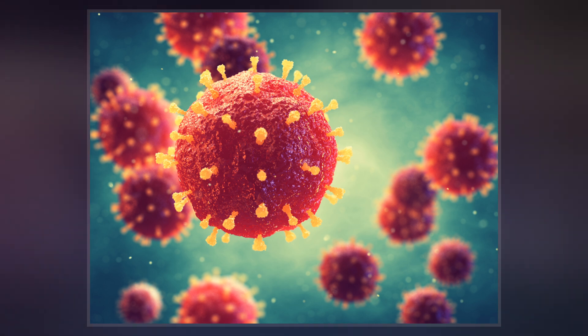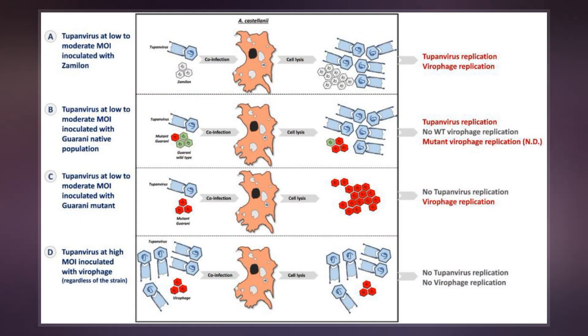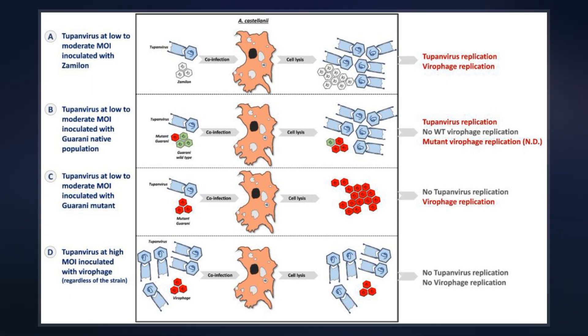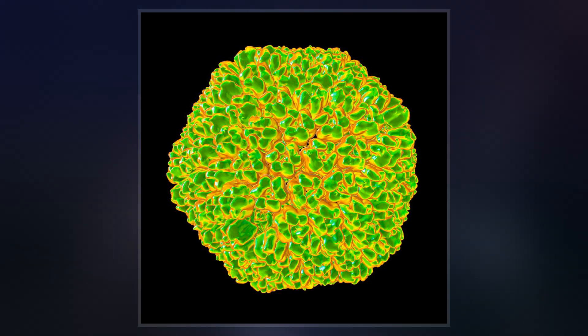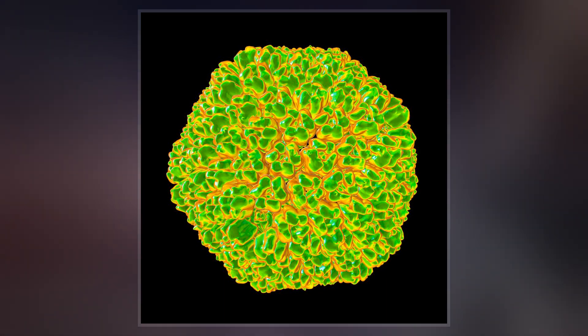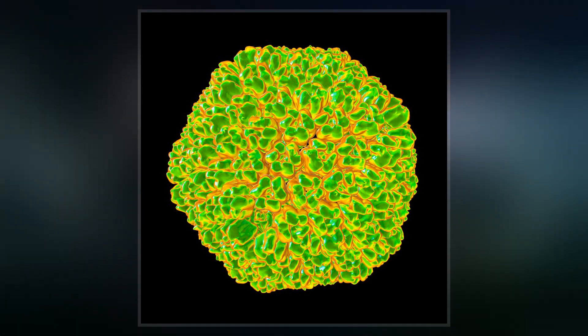Unlike satellite viruses, viraphages have a parasitic effect on their co-infecting virus. Viraphages have been observed to render a giant virus inactive and thereby improve the condition of the host organism.